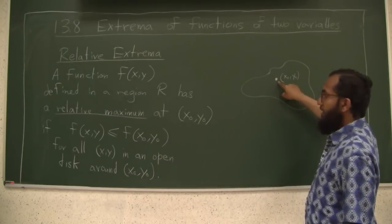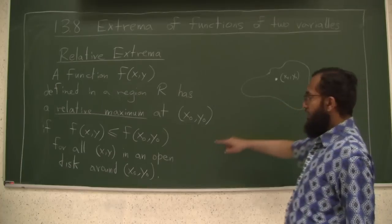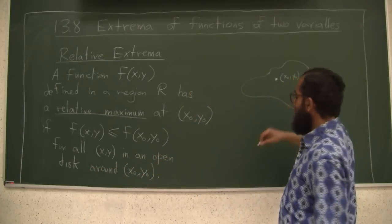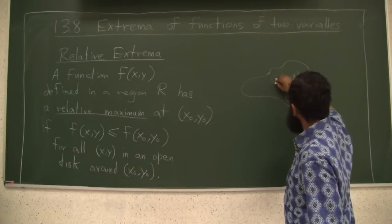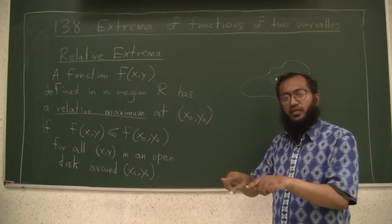At that point, the function has a relative maximum. So if you can find an open disk, this means a circular shape. Open means the boundary of the disk is not included.